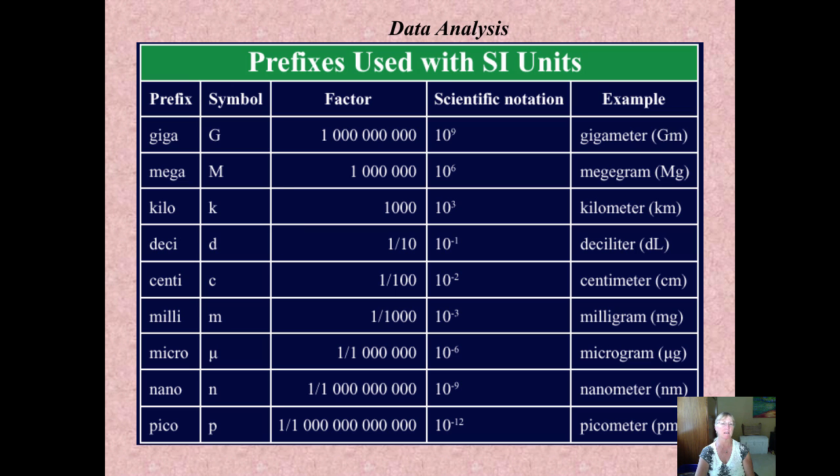And remember how I said the little letter m was the abbreviation for a meter? Well, the little letter m is also the abbreviation for the prefix milli. It doesn't mean a million. It means one one thousandth or 0.001, otherwise written as 10 to the minus three.